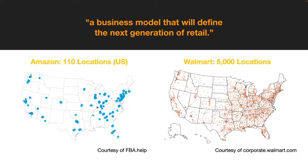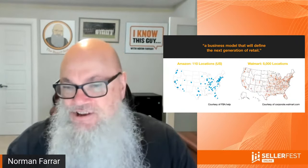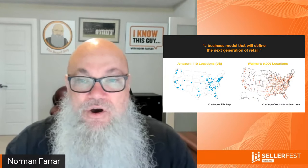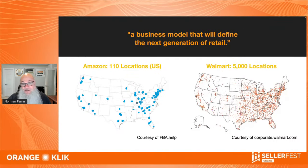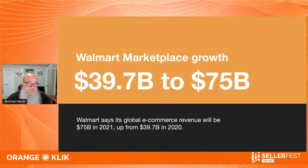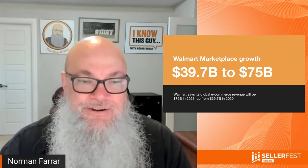Walmart's business model is very different from Amazon's. Amazon has 110 fulfillment centers, but Walmart is converting and working with 5,000 stores for Project Glass, giving them far more fulfillment locations. In one year they went from 39 billion to 75 billion dollars in e-commerce — almost double growth — and I think this year that will double again.